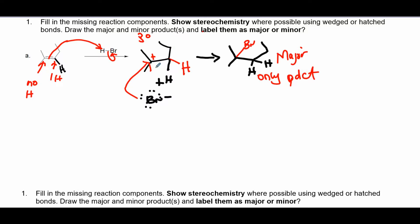Now determine what type of carbocation you have. This is a carbocation intermediate — a carbon with a plus charge. It's tertiary because the carbon bearing the plus charge is bonded to three other carbons. Tertiary is more stable than secondary, and secondary is more stable than primary. Check whether shifts are necessary; since it's as stable as it can be, we leave it there.